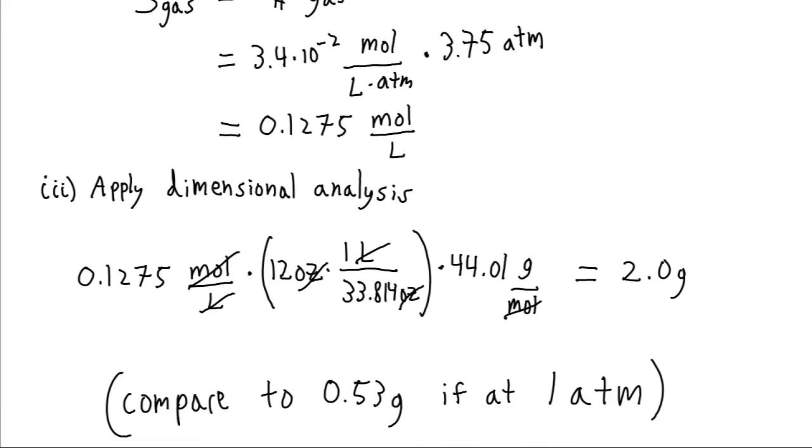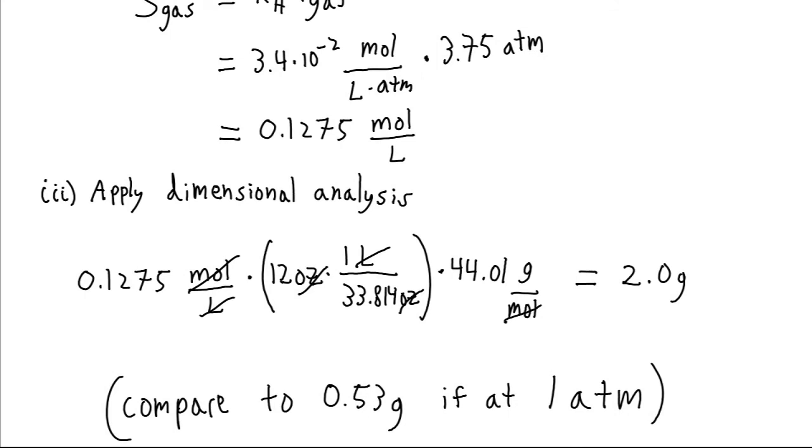Now you can compare this to if we'd done the same calculation, but instead of doing this at 3.75 atmospheres, we'd done it at one atmosphere. At one atmosphere, we would have gotten an answer of 0.53 grams. So when you open a can of Coke, initially there's about 2 grams of carbon dioxide dissolved in the liquid, and if you leave it out on your counter for a day or so, then 1.5 grams of that will escape, and only half a gram will remain in the solution.